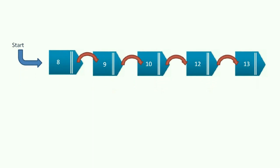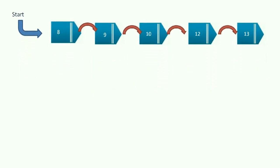Let us assume that this linked list has already been created with start pointing to the first node. There are five different nodes with the data 8, 9, 10, 12, and 13. Link of 13 is null.